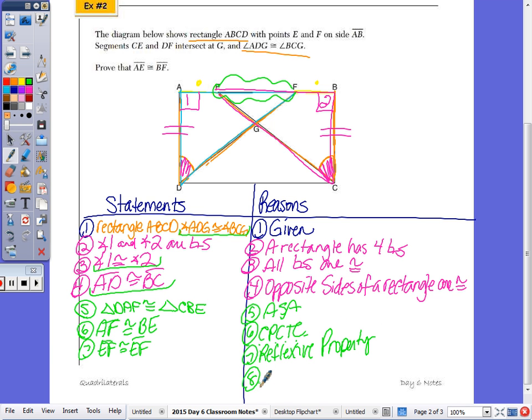And we can go right to subtraction. You don't have to show what segment minus what segment. So by subtraction, AE is congruent to BF.